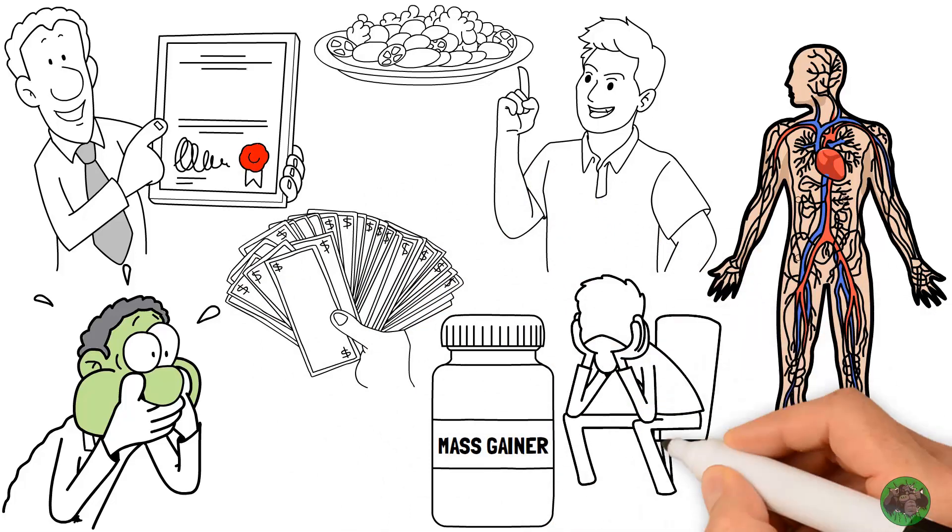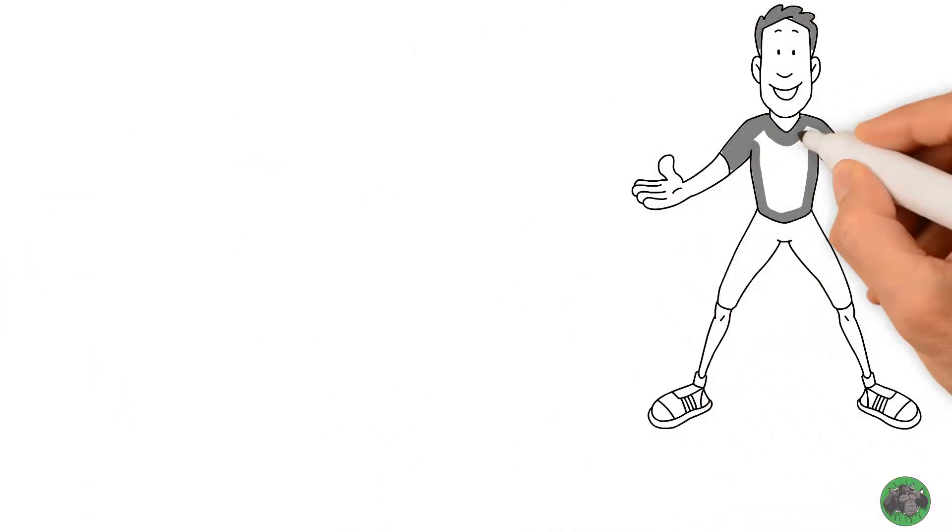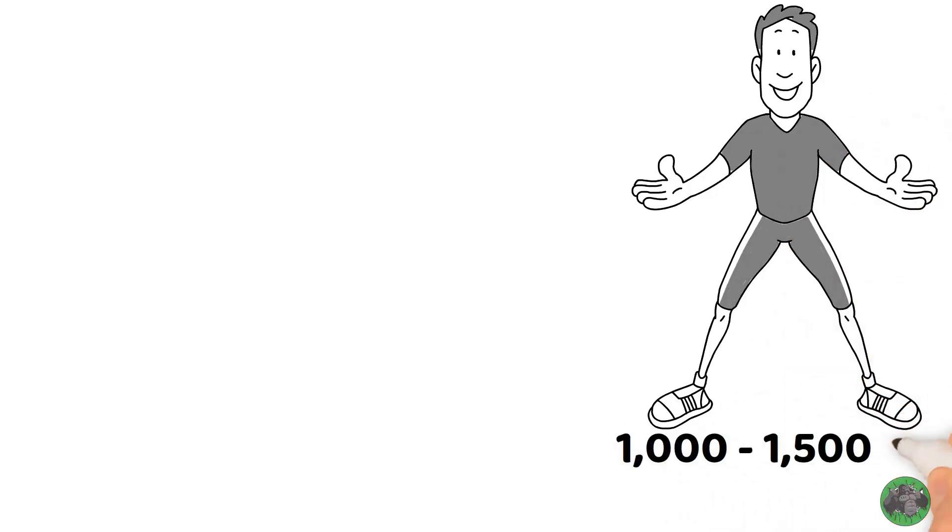Mass gainer is better if you find it hard to put on weight because it has the bulk in calories required, from 1,000 to 1,500 per serving.